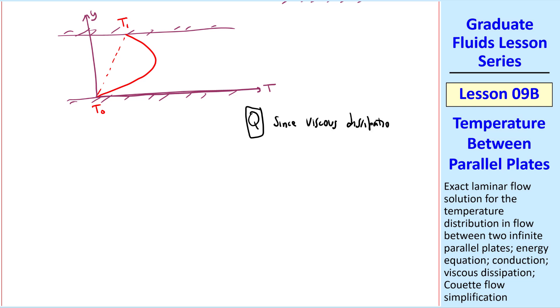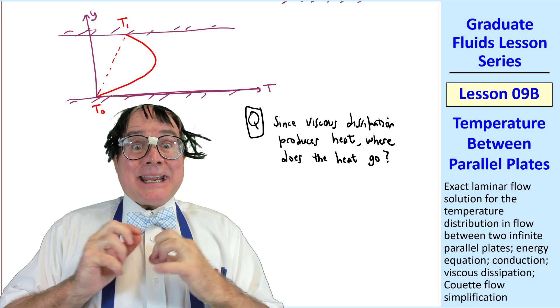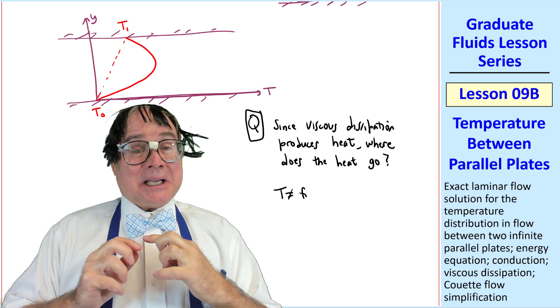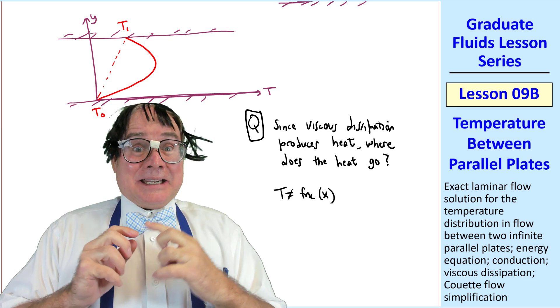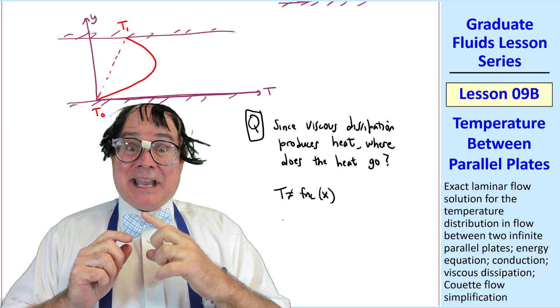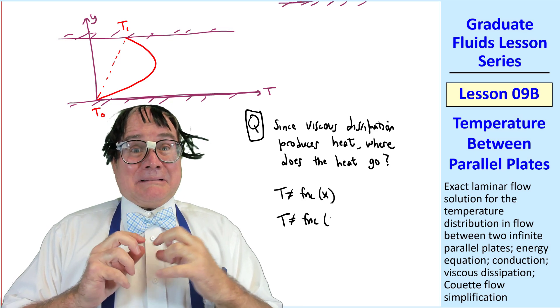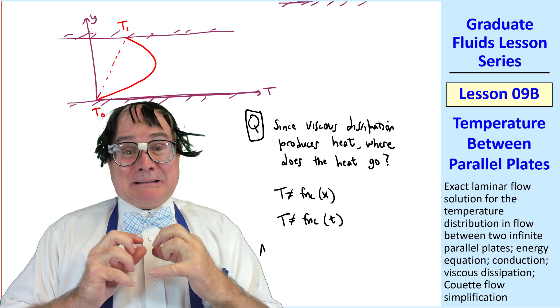Let me ask the students a question. Since viscous dissipation produces heat due to friction, where does the heat go? Does it make the temperature increase downstream? No, it can't since t is not a function of x. Our problem is fully developed. Does it make temperature increase with time? No, it can't do that either. Our problem is steady. t is not a function of time. I don't know then.